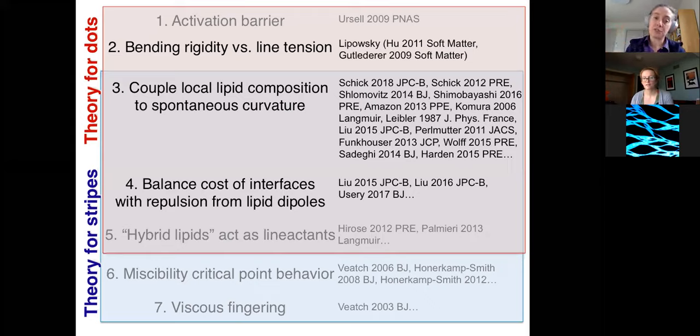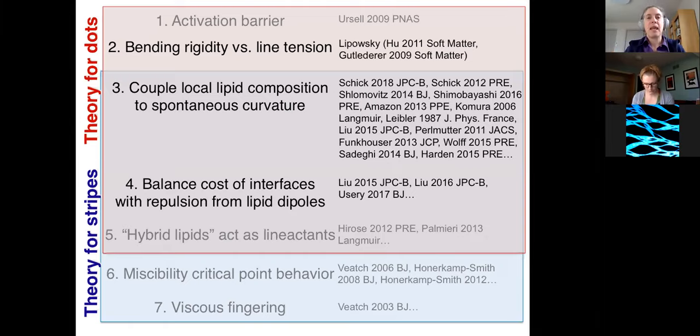You can break down the literature into a few different categories. Those that pertain to stripes I've outlined in blue. Those that pertain to dots I've outlined in red. There's some that, for reasons I'm not going to get into, we already know are not the case, and I've grayed those out. The ones that pertain to stripes and dots are the ones I'm going to tell you about today, number three and number four. The broad class of these different theories think about coupling the local composition of the membranes. What's the fraction of each lipid in a particular part of the membrane that is curved one way versus curved a different way. And another class of theories thinks about a balance of interfaces, the cost of an interface with repulsion from a lipid dipole.